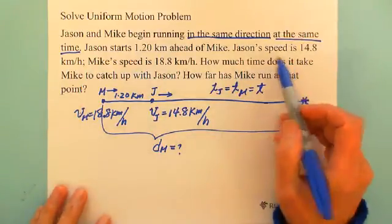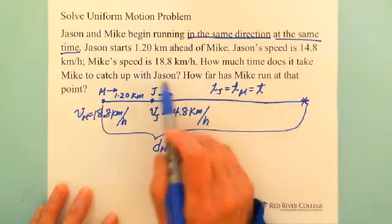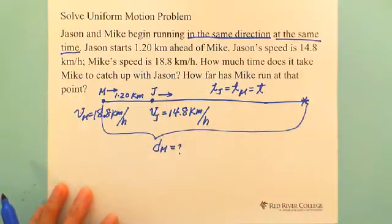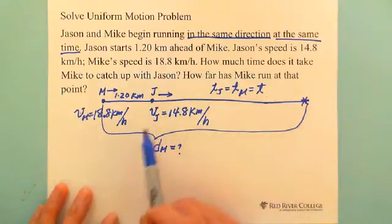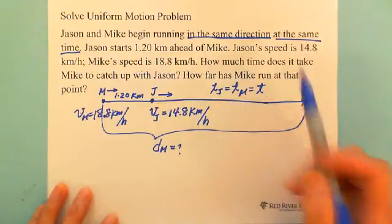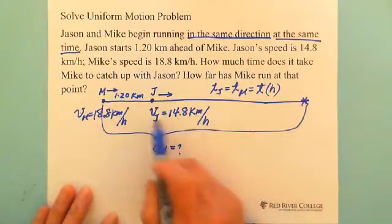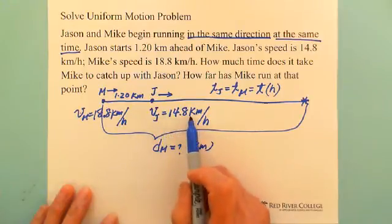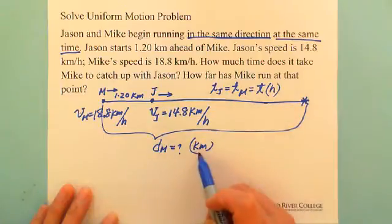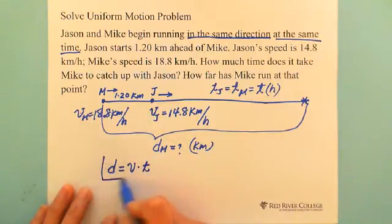This question involves speeds of 14.8 and 18.8 km/h, and we're assuming uniform motion — this is the average speed. For uniform motion, the formula relates distance, time, and speed. From the units: km/h multiplied by hours gives km. So the formula is D equals V times T. We'll use this formula to solve the question.